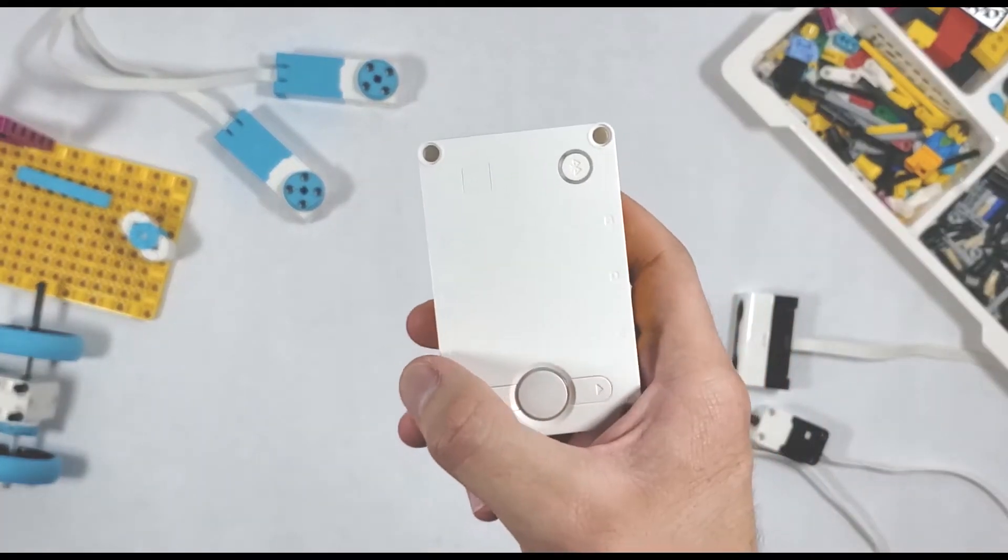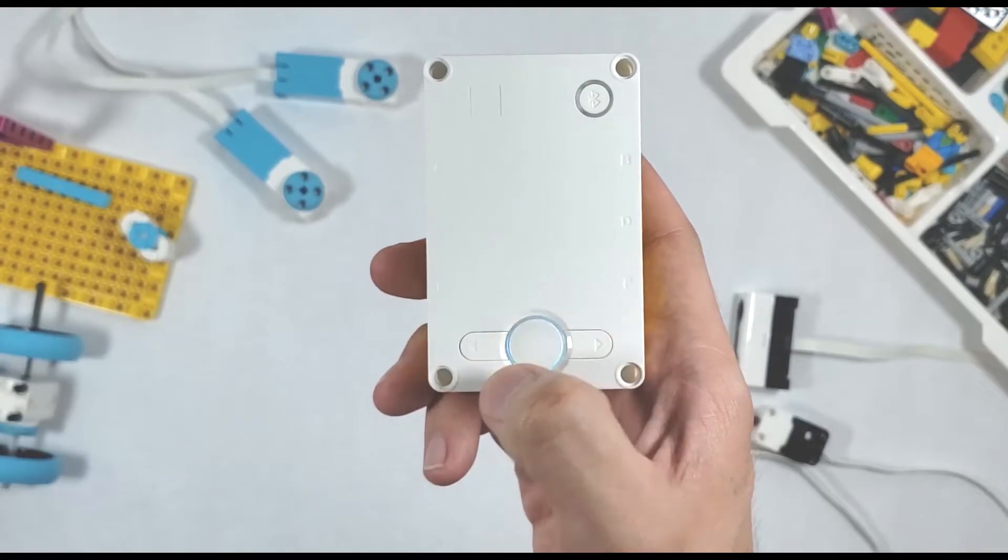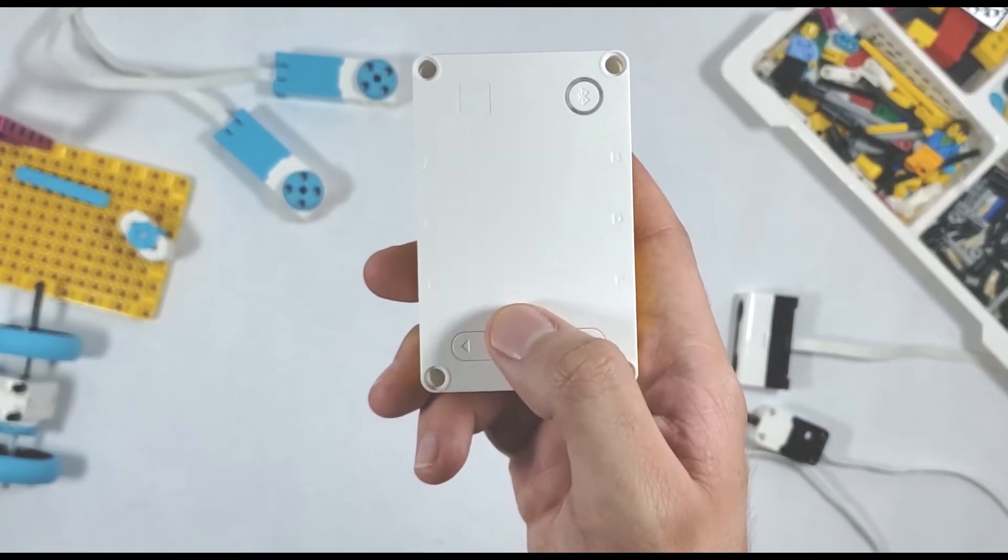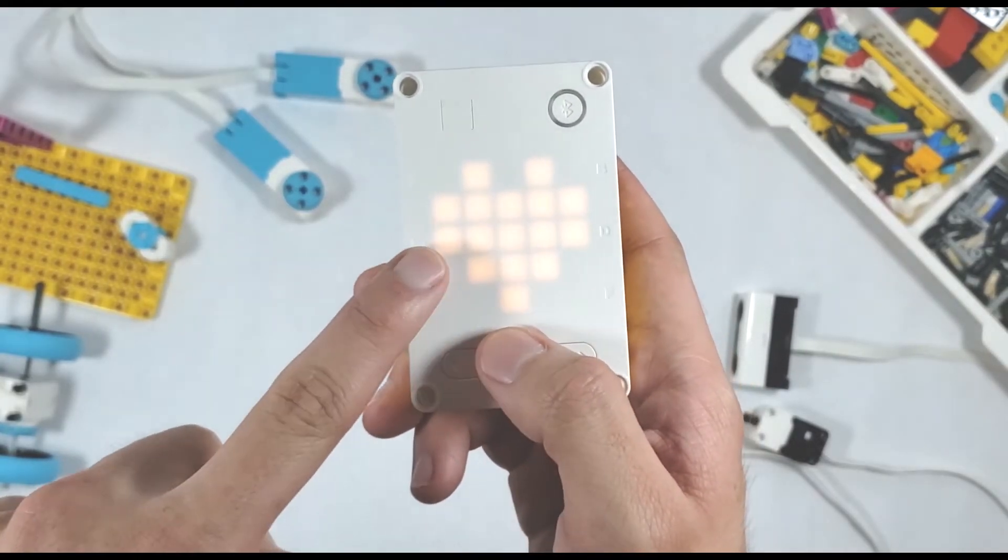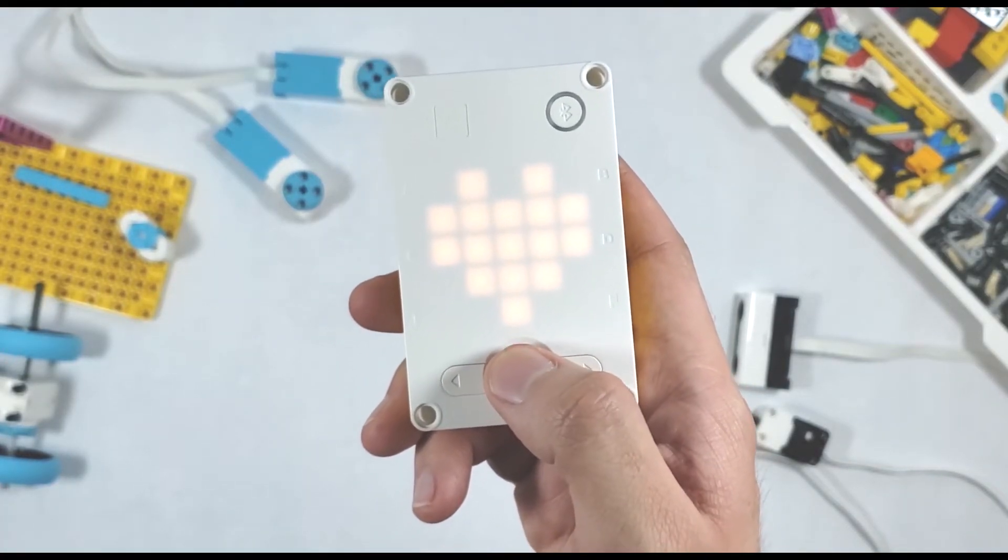We're going to take a look at one of the neat built-in functions that comes with the Spike Prime Hub. When you first turn on the hub, you'll notice that this little heart diagram pops up on the display, and what's really cool is that this is actually a function that allows you to control sensors and motors without actually needing to code anything.